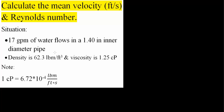We want to solve for the mean velocity and Reynolds number. The average velocity is equal to the volumetric flow rate divided by the cross-sectional area. Here, this is the average velocity, this is the volumetric flow rate, and this is the cross-sectional area.